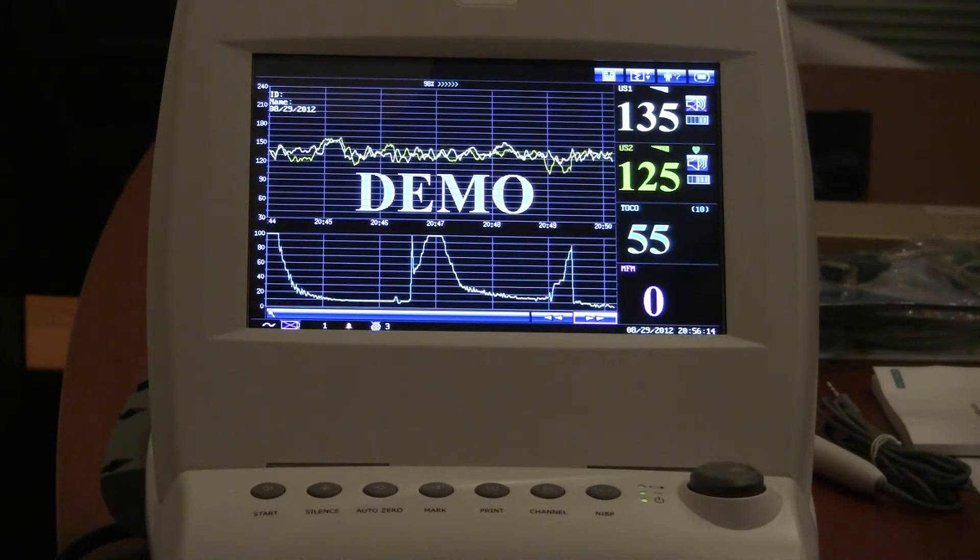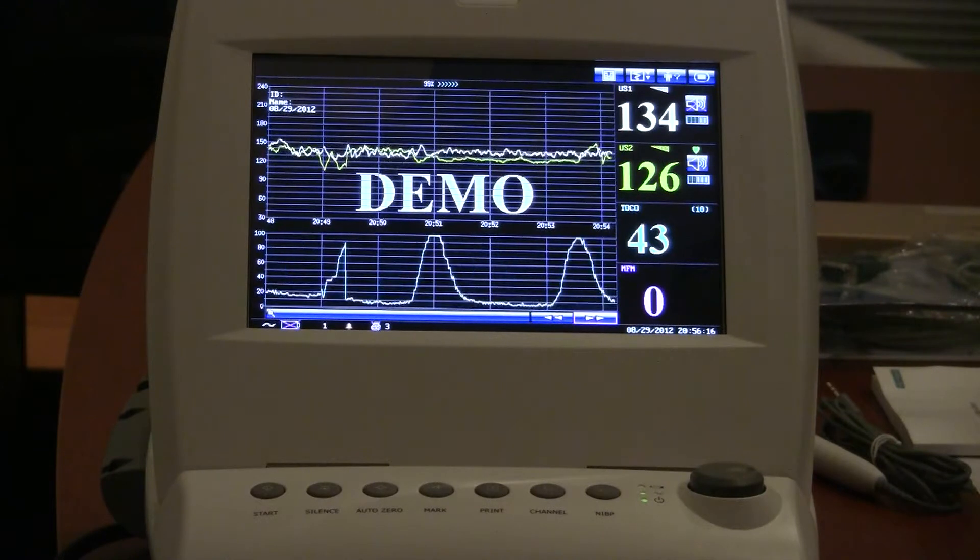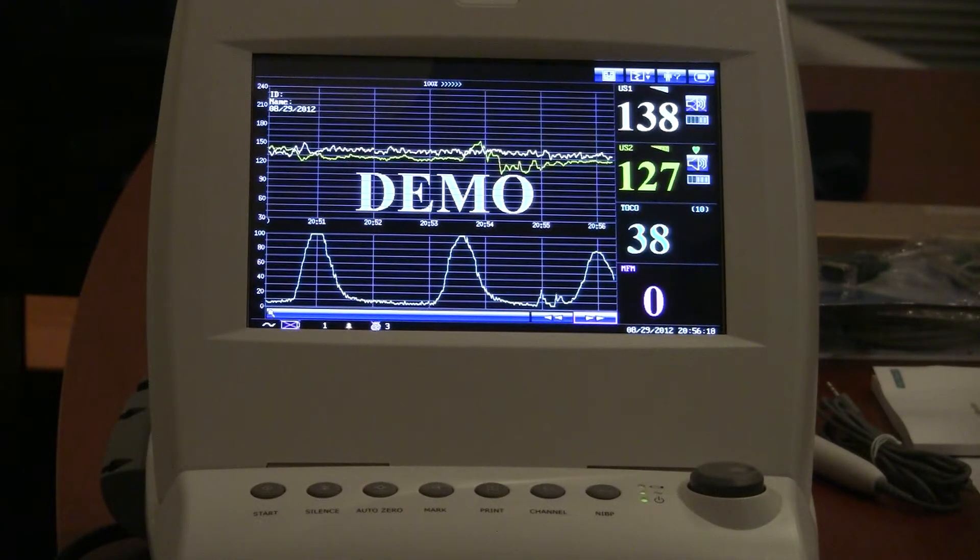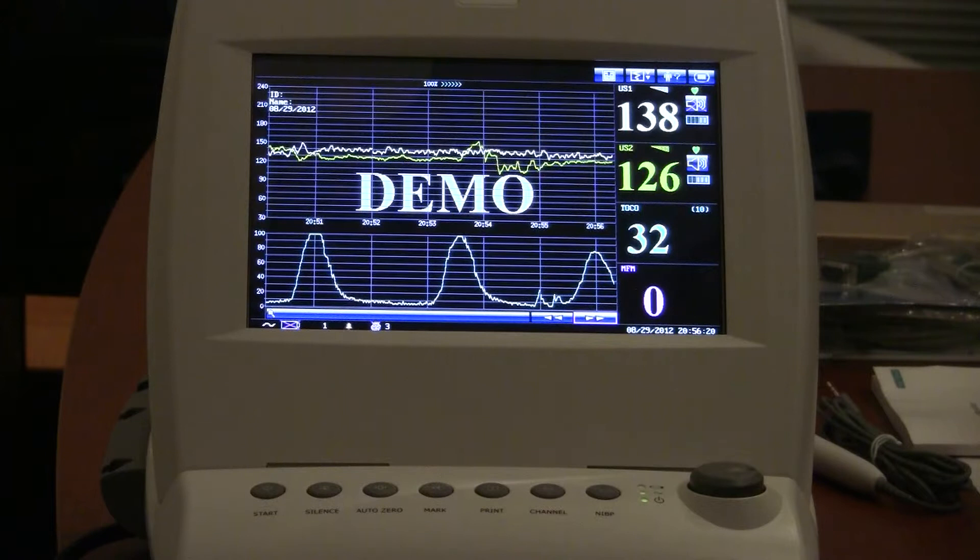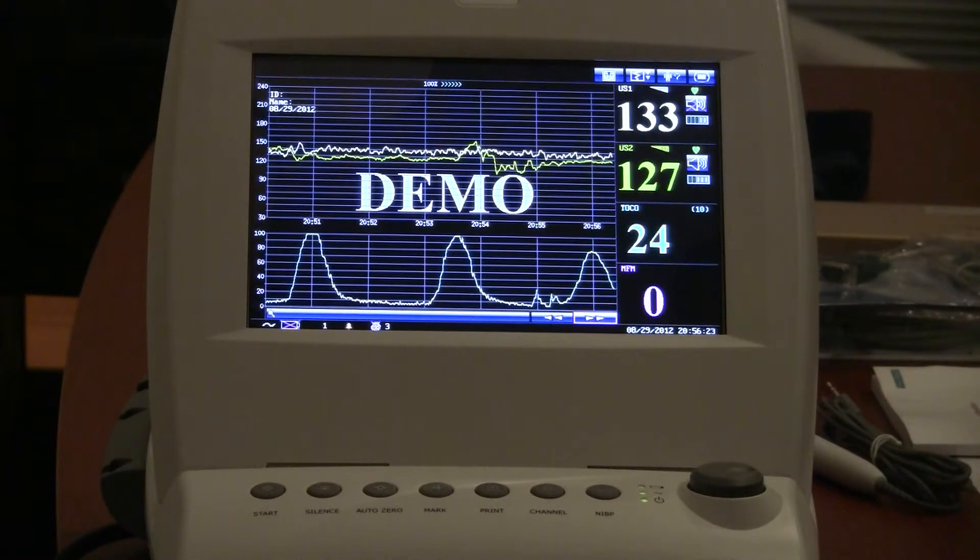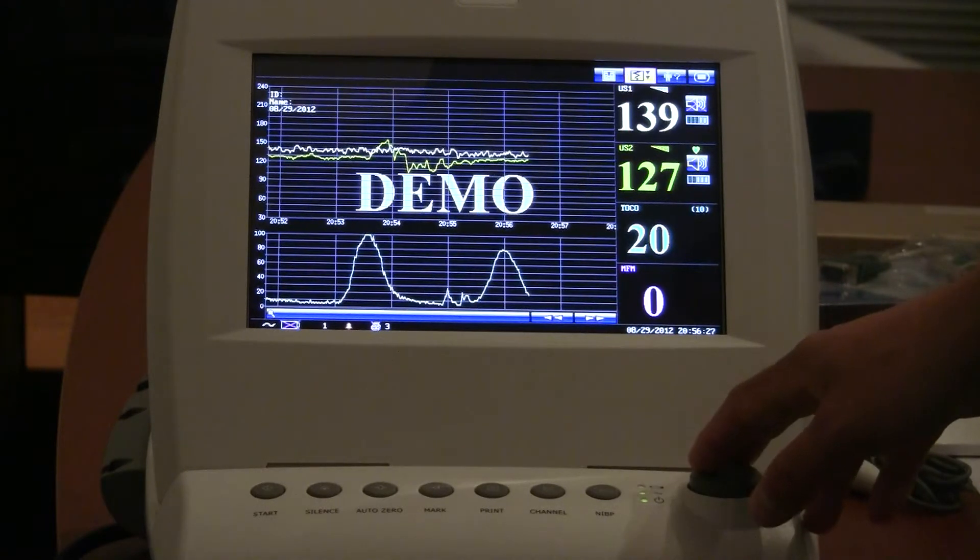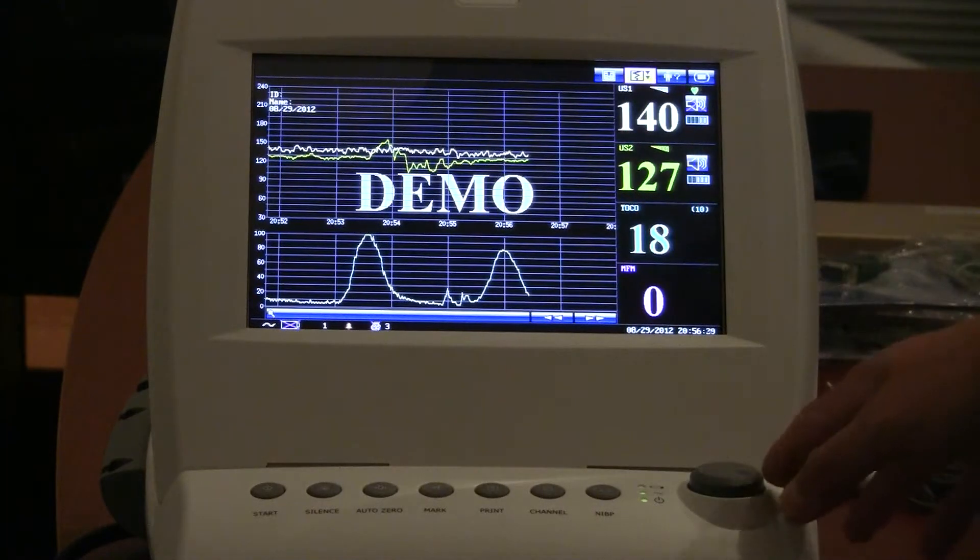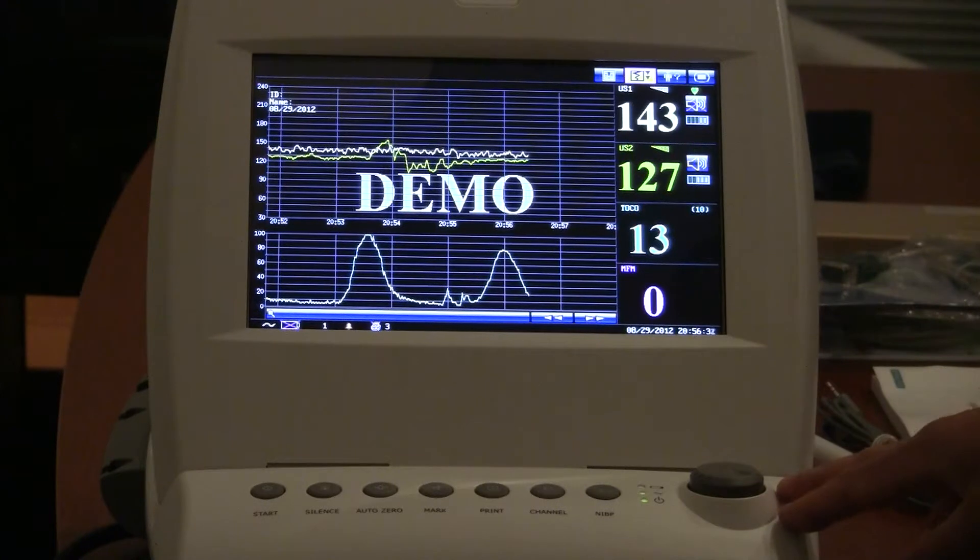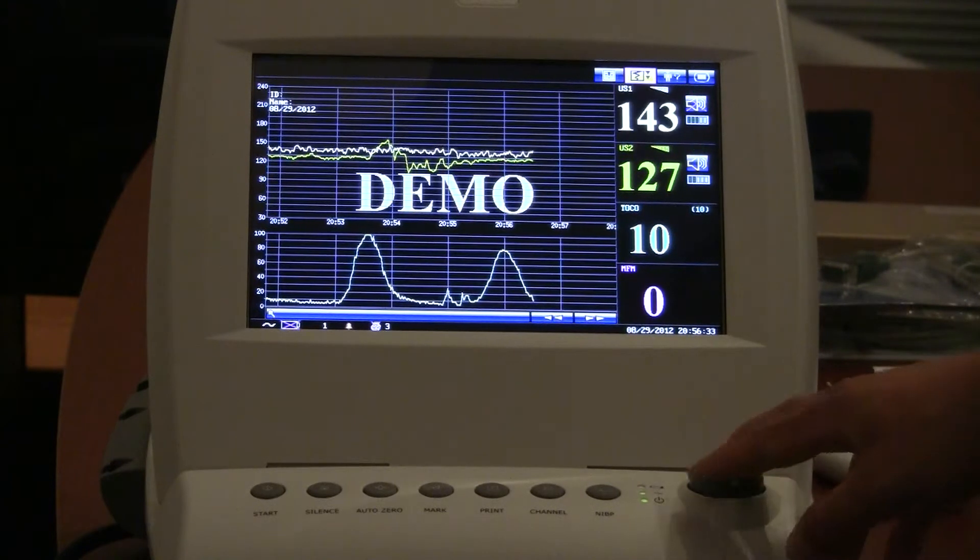So again, this machine will store 60 hours of data, so the practitioner, the nurse, or the doctor can come in and quickly review the history of this patient and make sure everything's okay. Or if they miss some sort of event that they want to scroll back to specifically, they can quickly do that.